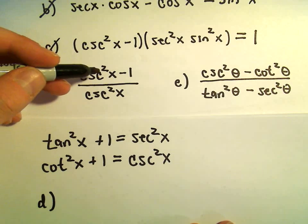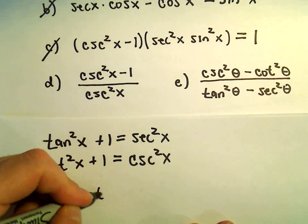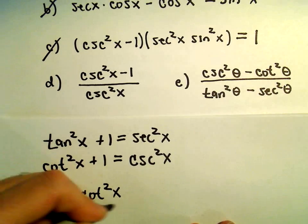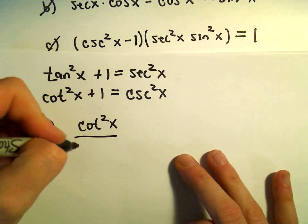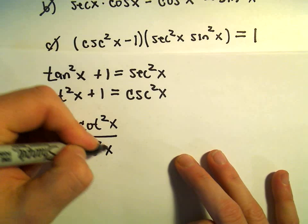It says cosecant squared x minus 1 would be cotangent squared x. And that's all being divided by the original cosecant squared x.